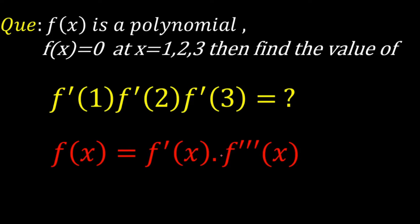Today we're going to look at a cool problem from functions. The problem is: if f(x) is a polynomial function equal to 0 at x = 1, 2, and 3 — meaning the roots of this polynomial are 1, 2, and 3 — find the value of the product of first derivatives f'(1)·f'(2)·f'(3), given that f(x) satisfies the functional equation f(x) = f'(x)·f'''(x), where f'(x) is the first derivative and f'''(x) is the third derivative.